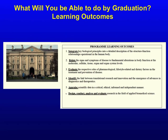What will you be able to do by graduation? From the academic perspective, the learning outcomes are: to integrate fundamental biology into a picture of how the body works and relate this to signs and symptoms of disease, from the molecular through to cellular, tissue, organ and organ systems level; to evaluate the impact of pharmacology, lifestyle and dietary factors in treatment and prevention of disease; to understand how biomedical research works; to appraise scientific data; and to design, conduct, analyse and evaluate research in biomedicine.